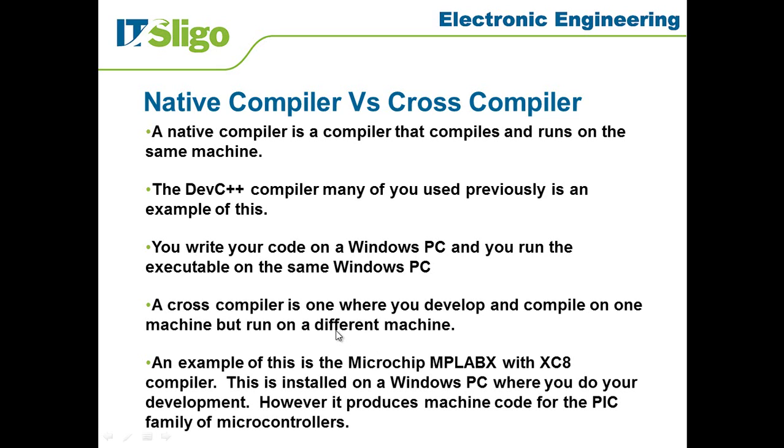Going back to the DevC++ compiler as an example: you write your code on a Windows PC and you run the executable on the same Windows PC, or you can take it to another Windows PC where it should work. The only thing is that if the Windows is a different version it may have issues, but other than that it should work. That's a native compiler—you're sticking to the computer that you started on.